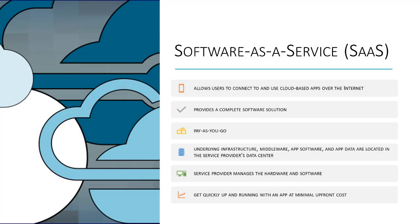Software-as-a-Service, or SaaS, allows users to connect to and use cloud-based apps over the internet. Common examples of Software-as-a-Service include email, calendaring, and office tools such as Microsoft Office 365. Software-as-a-Service provides a complete software solution that organizations purchase on a pay-as-you-go basis from cloud service providers such as Microsoft Azure.